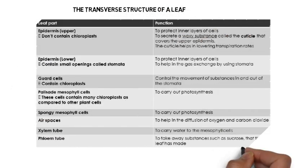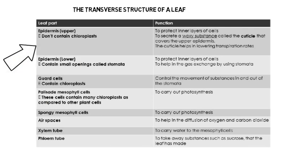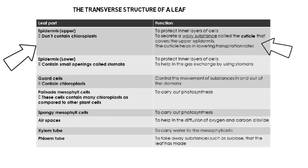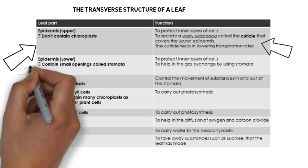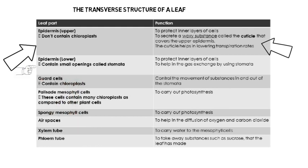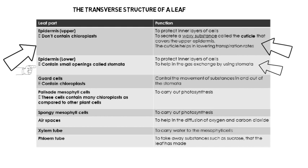The transverse structure of a leaf. Here follow the leaf parts and their functions. The upper epidermis does not contain chloroplasts. It is used to protect inner layers of cells and to secrete a waxy substance called the cuticle that covers the upper epidermis. The lower epidermis contains small openings called stomata.